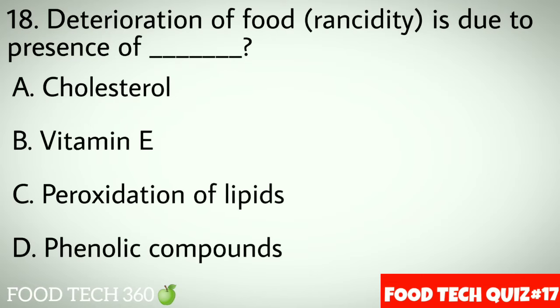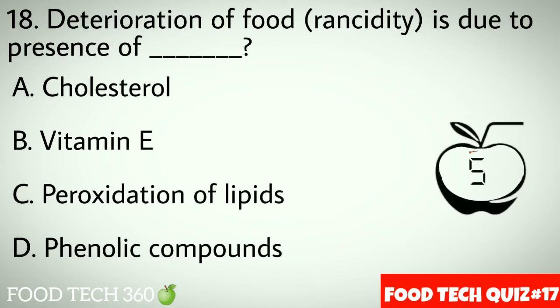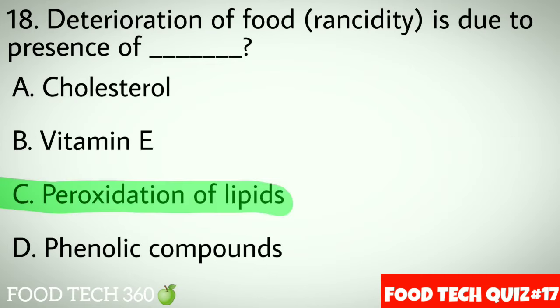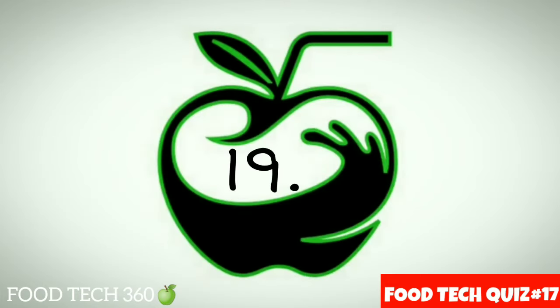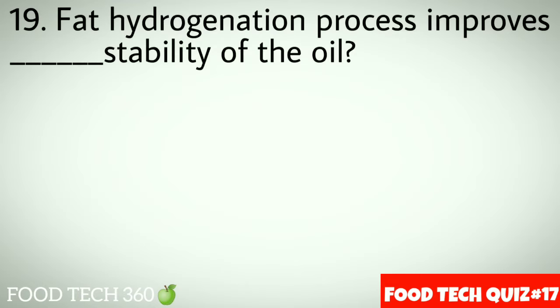Question number 18: Deterioration of food or rancidity is due to the presence of dash. Options: A. Cholesterol, B. Vitamin E, C. Peroxidation of lipids, D. Phenolic compounds. Correct answer: C. Peroxidation of lipids.